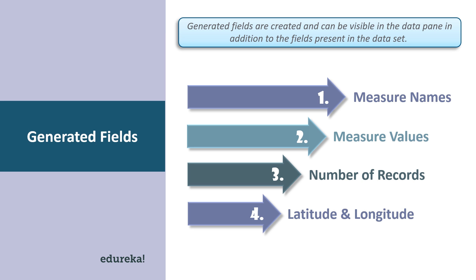All the measure values present in a data set are kept together in the field called measure values, and it is also always present at the end of the measures list. It consists of all continuous values of all measures. The number of records is basically like a count variable for those who have worked with Excel sheets and Power BI before. It shows the count of records present in a data set and is also an auto-generated field in Tableau which assigns the value of one for each record present in the data set.